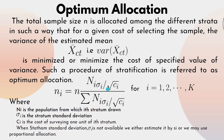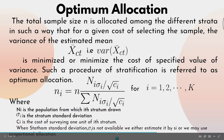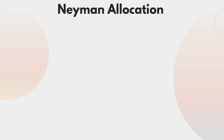The formula for optimum allocation is n_i = n × (N_i × σ_i / √c_i) / Σ(N_i × σ_i / √c_i), where N_i is the population of the i-th stratum, σ_i is the stratum standard deviation, and c_i is the cost of surveying one unit of the i-th stratum. When stratum standard deviation is not available, we use s_i estimated from the sample, or we may use proportional allocation instead.